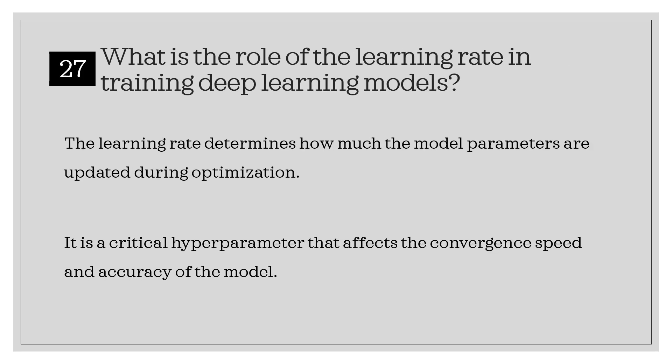What is the role of the learning rate in training deep learning models? The learning rate determines how much the model parameters are updated during optimization. It is a critical hyperparameter that affects the convergence speed and accuracy of the model.